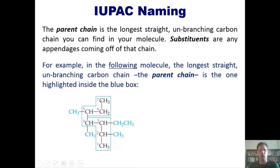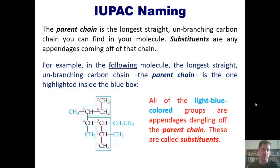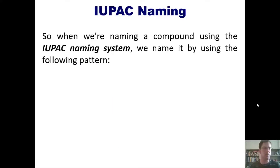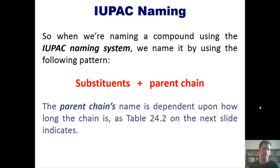For example, in this molecule, the longest straight unbranching carbon chain — the parent chain — is the one highlighted inside the blue box. If you trace carbon to carbon in any direction, that is the longest straight chain you can get. All the light-blue colored groups dangling off of that parent chain are called substituents.